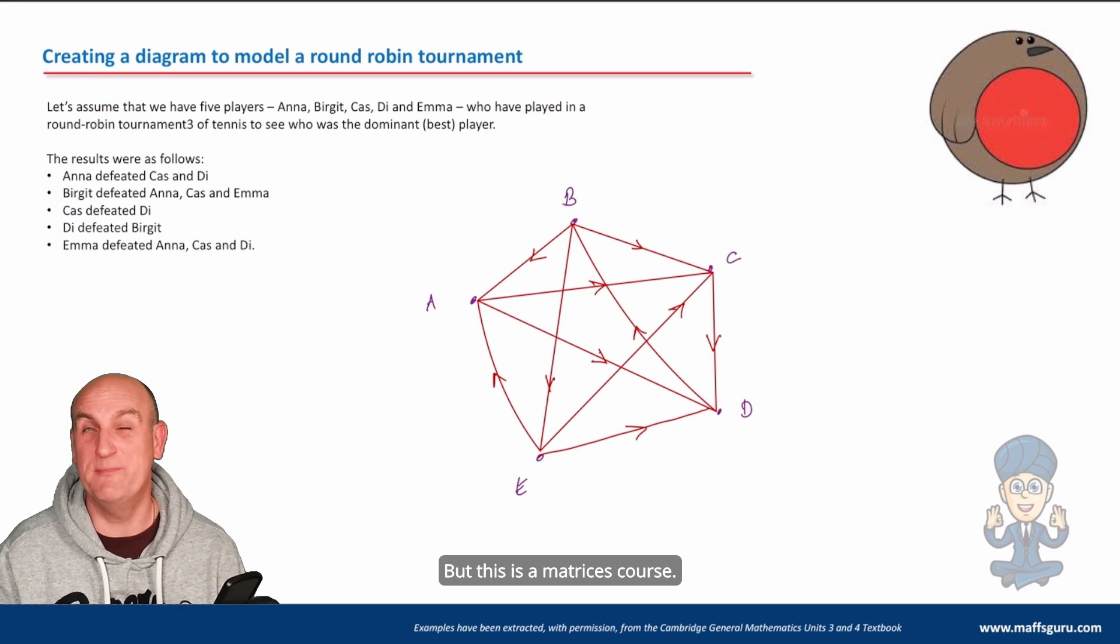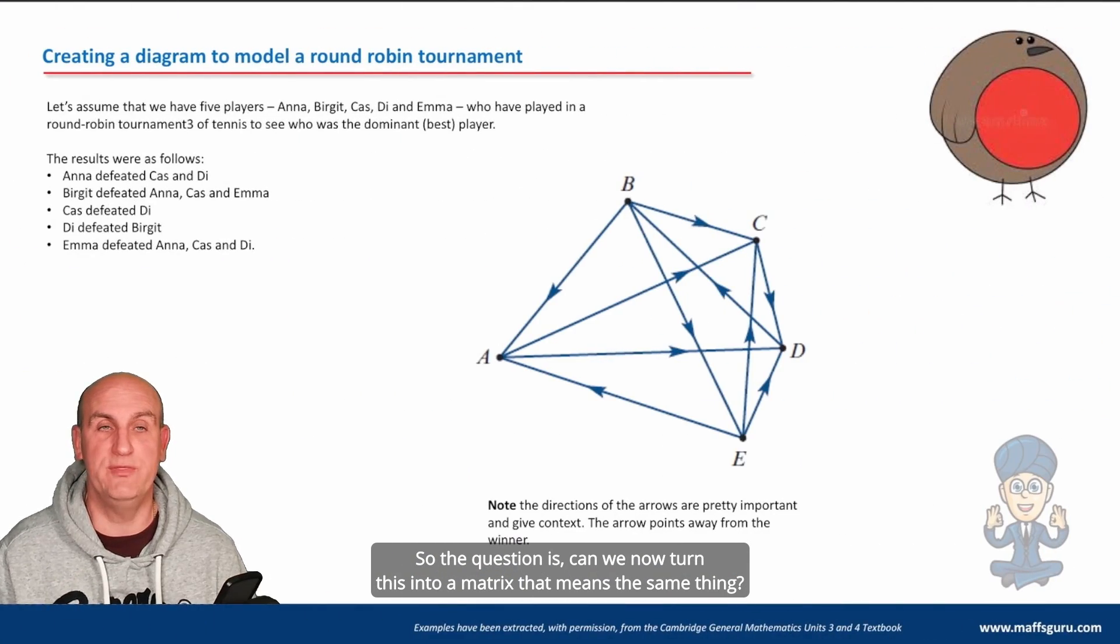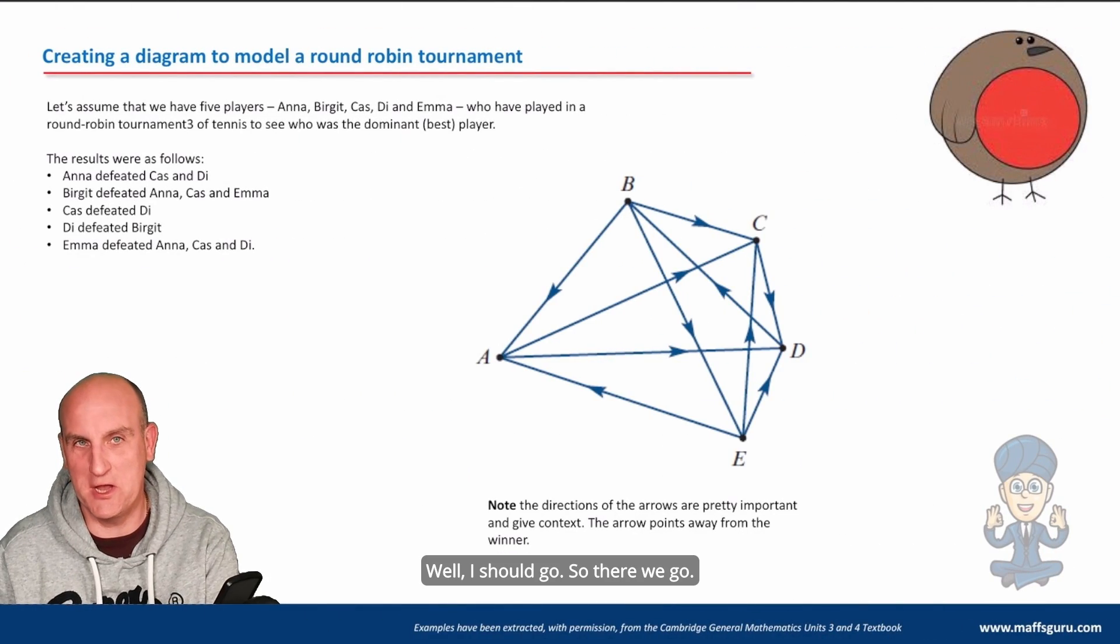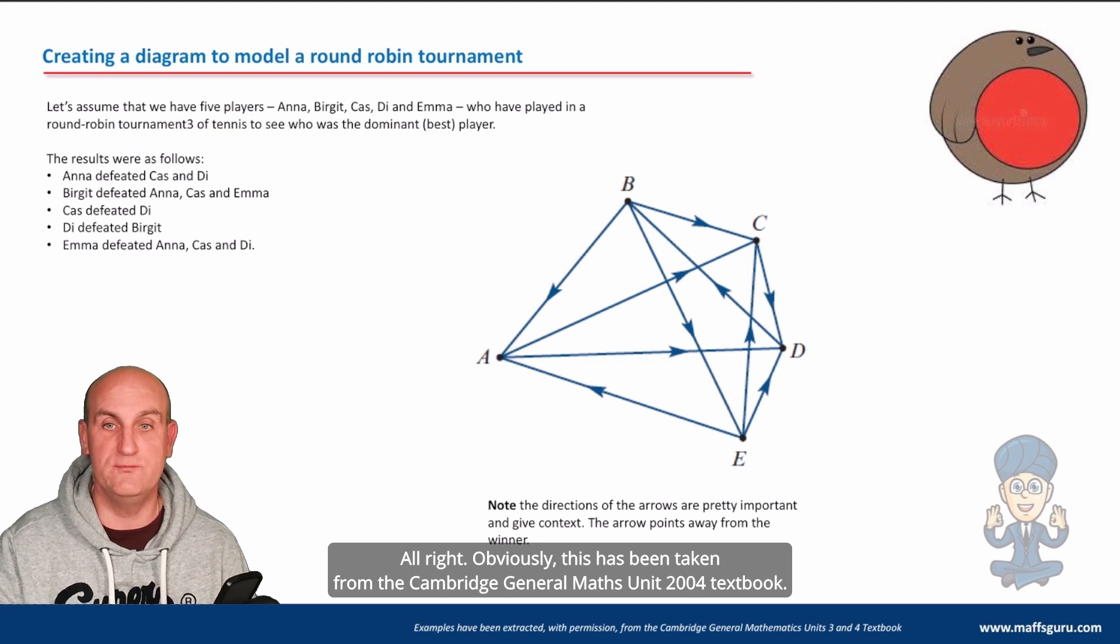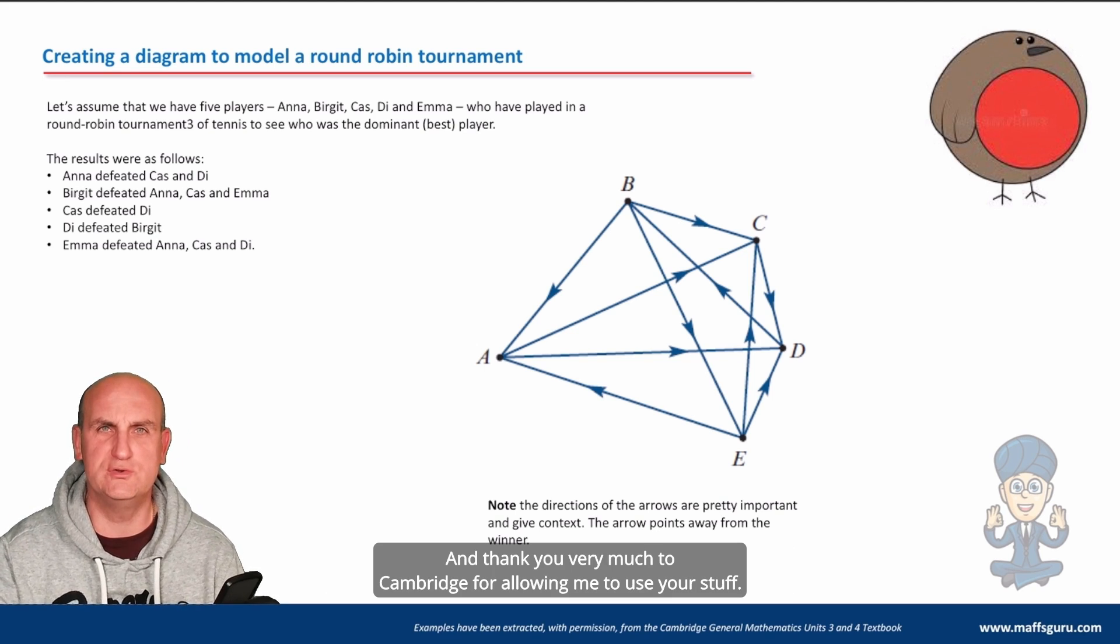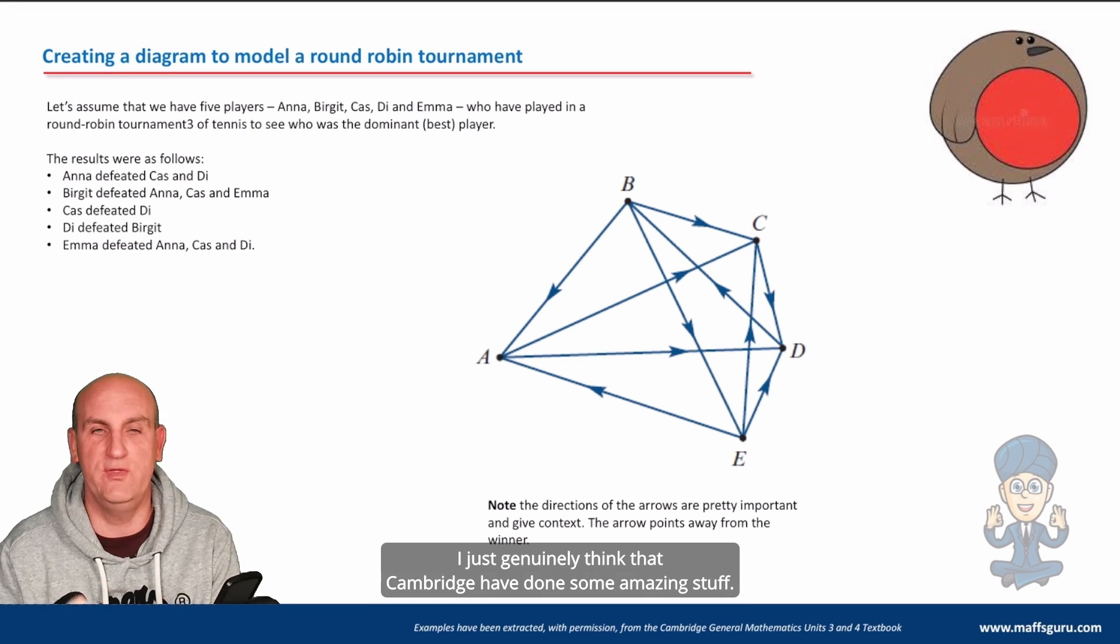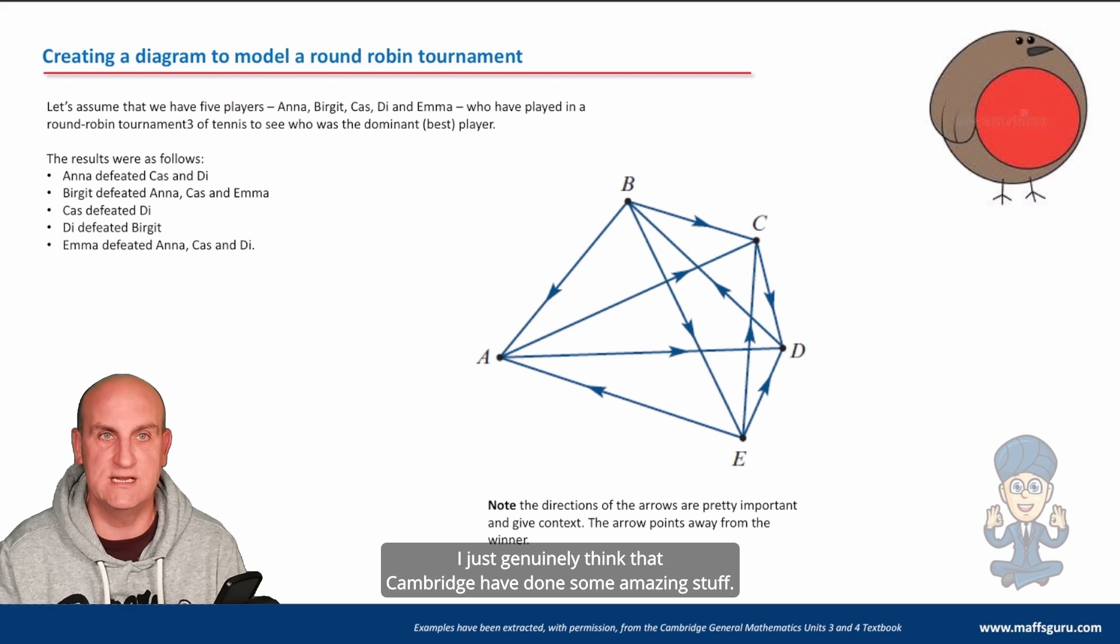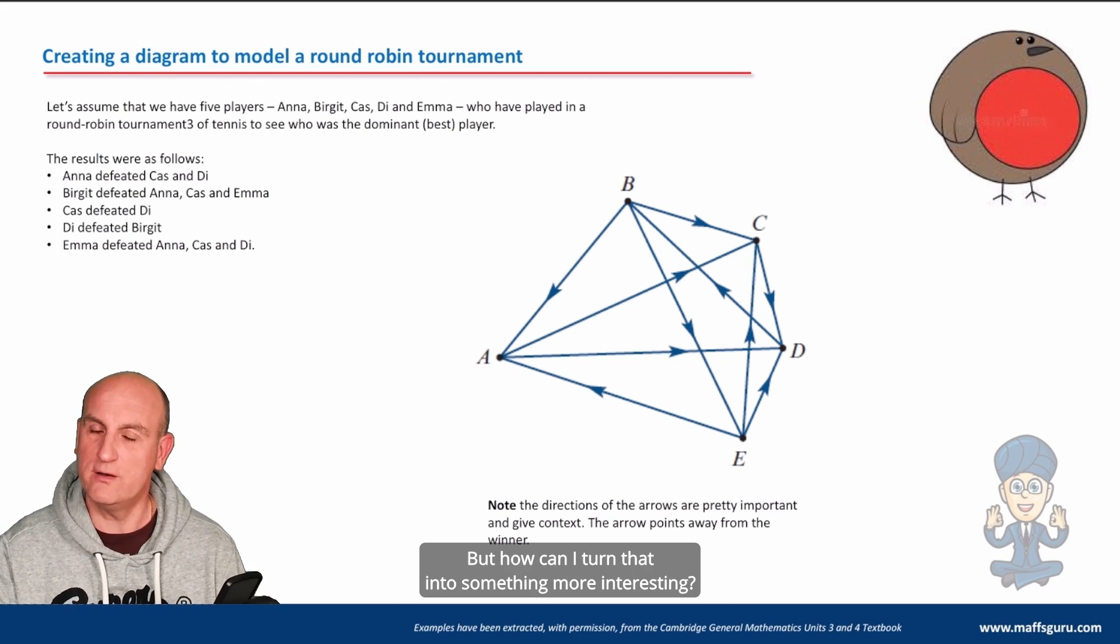But this is a matrices course, so the question is, can we now turn this into a matrix that means the same thing? Well, I should hope so. So there we go - there's my diagram. Obviously this has been taken from the Cambridge General Maths Unit 3 and 4 textbook. Thank you very much to Cambridge for allowing me to use your stuff - you guys rock and I love your textbooks. I'm not endorsed by them, I just genuinely think that Cambridge have done some amazing stuff. But here is my diagram more formally. How can I turn that into something more interesting?